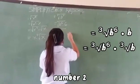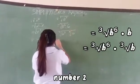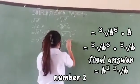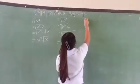The other just stays there. B squared times cube root of B is the final answer.